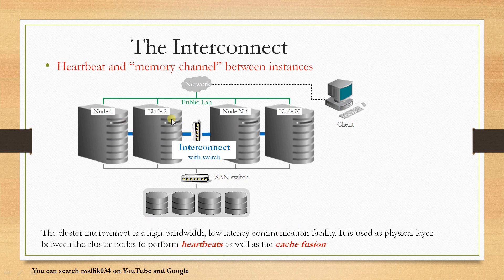The second advantage is cache fusion — data block transfer between nodes. For example, if a particular data block is already available in the buffer cache of node 1, it can be transferred to node 2 or node 3 whenever a client on node 3 requests that same buffer. The block already available in node 1 is shifted to node 3 and given to the client. That is called cache fusion: if any data block is available in any one node, it can be transferred to the requesting node.